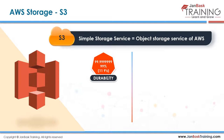S3 has 99.999999999% durability - that's eleven nines. Throughout the year, the chance of not being able to access your data is 100 minus eleven nines, meaning less than one in ten million.